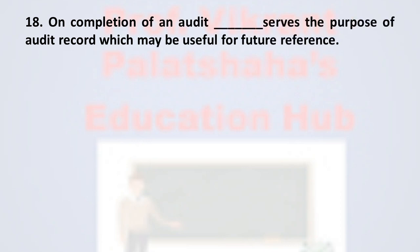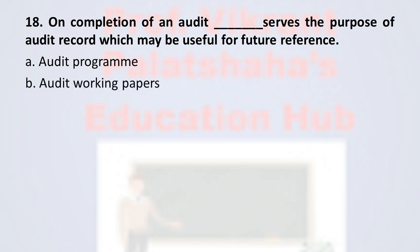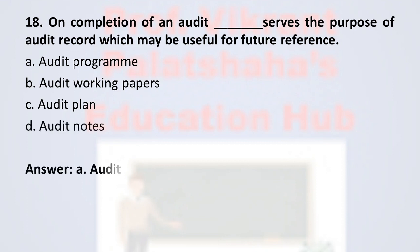Question number eighteen: on completion of an audit, this serves the purpose of audit record which may be useful for future reference. Option A audit program, option B audit working papers, option C audit plan, and option D audit notes. The correct option is option A, audit program.